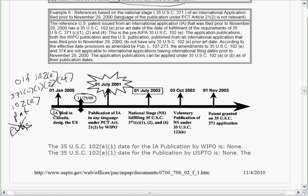So we have an international application filed. It designated the U.S. It published — word published, 102A. Under the old version, we're just looking for this date. We don't care about what language. Published by WIPO in any language is okay.